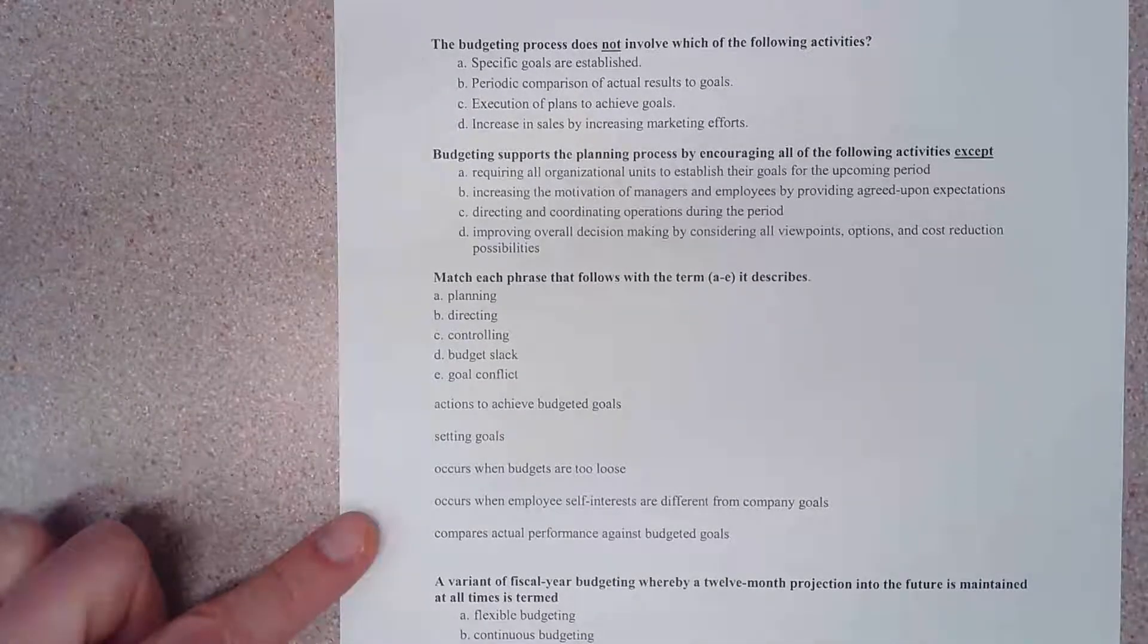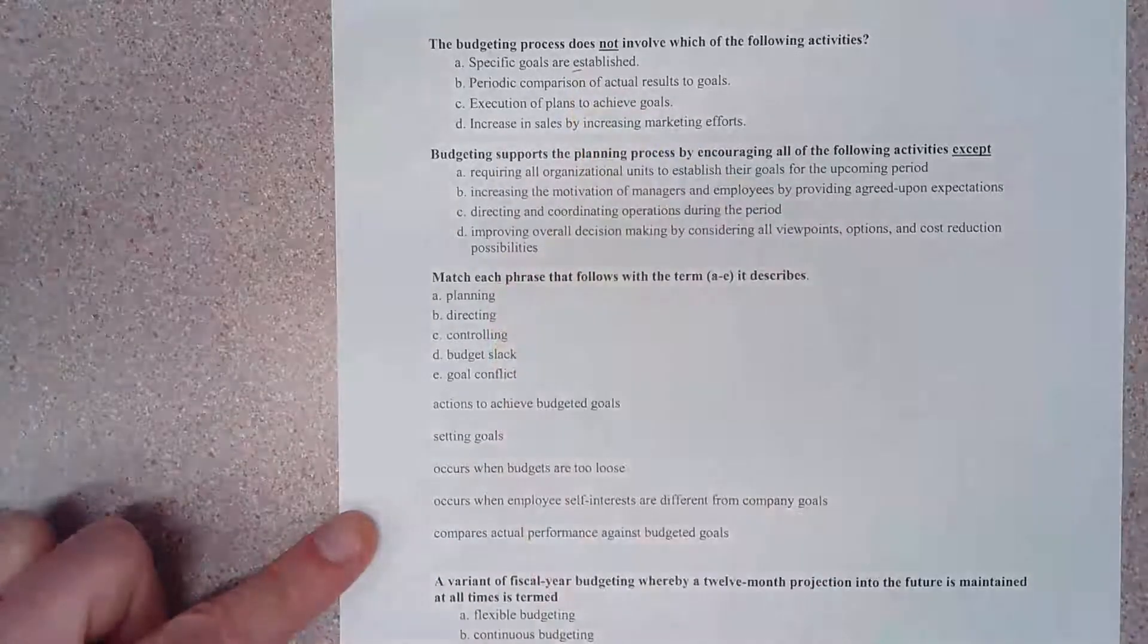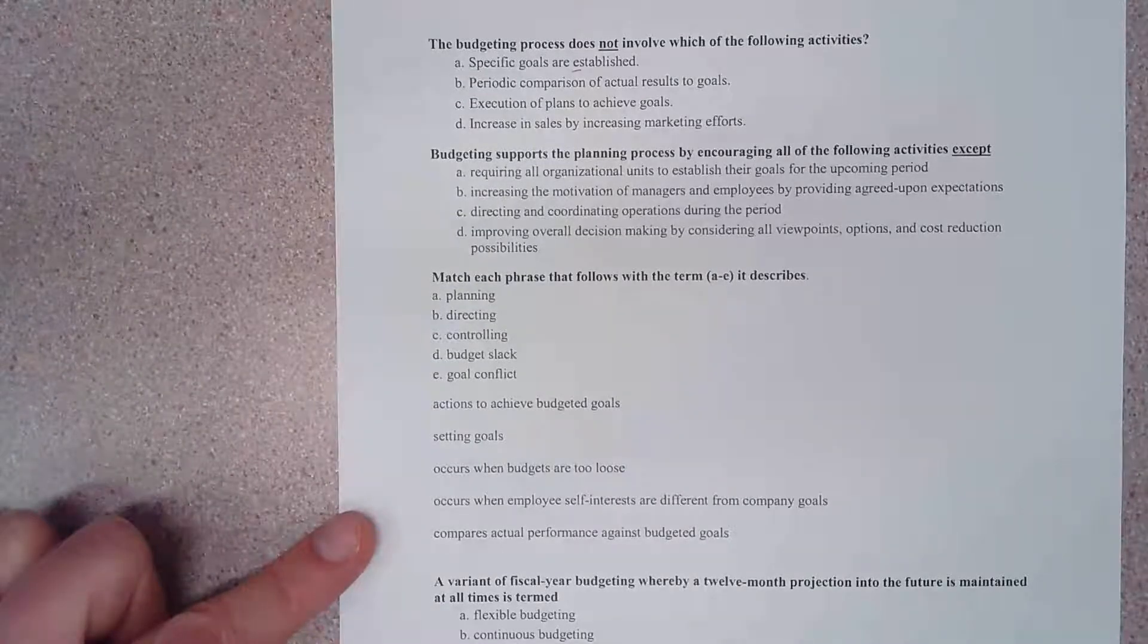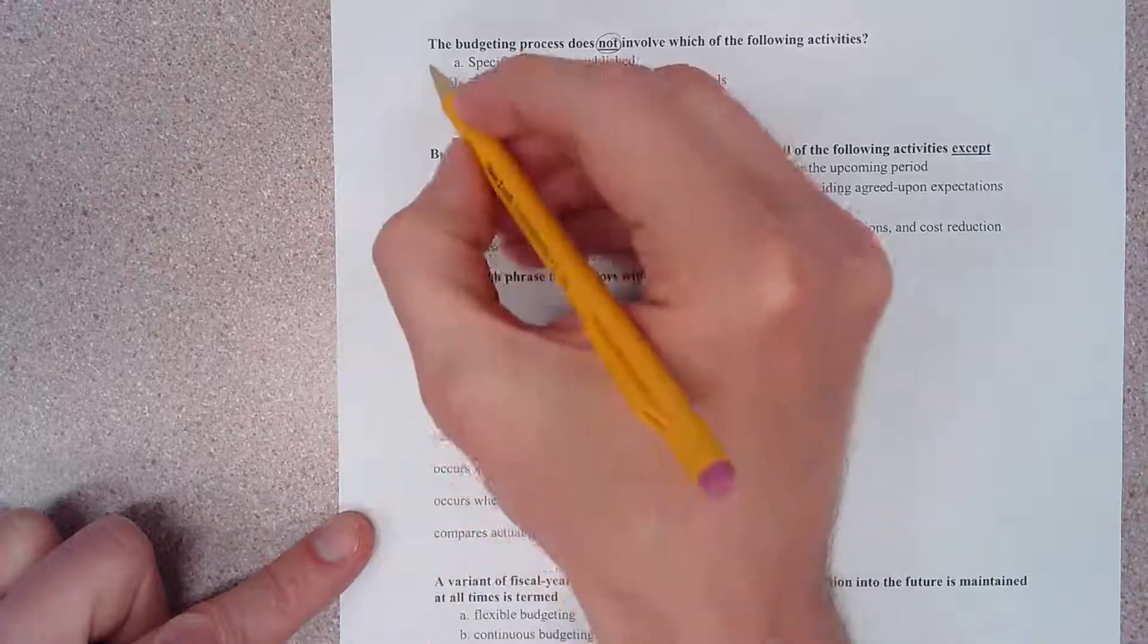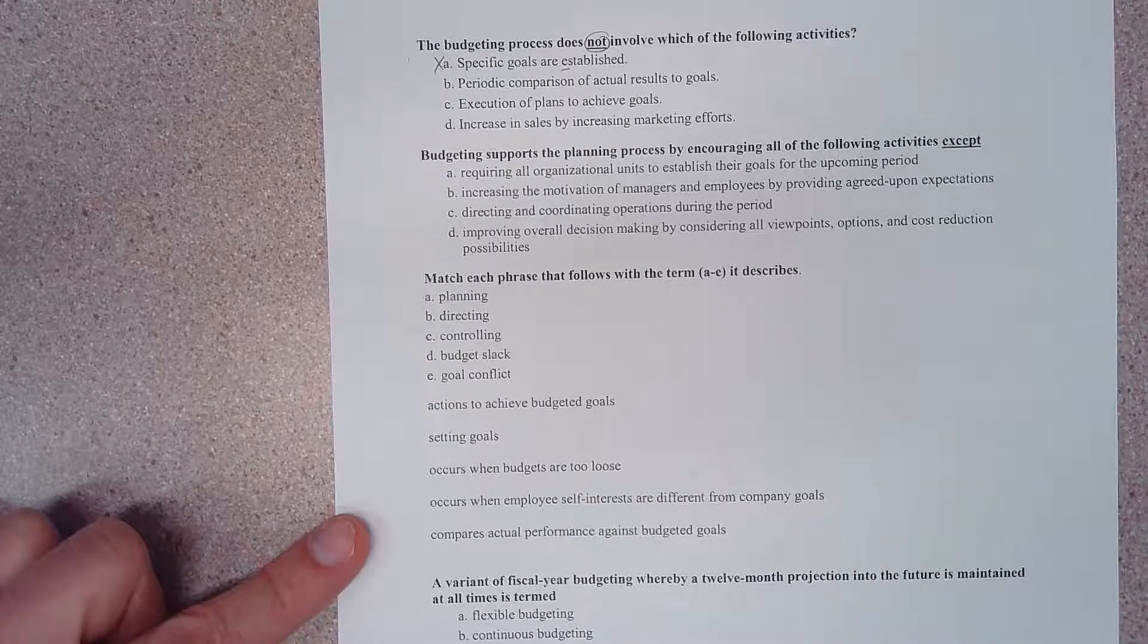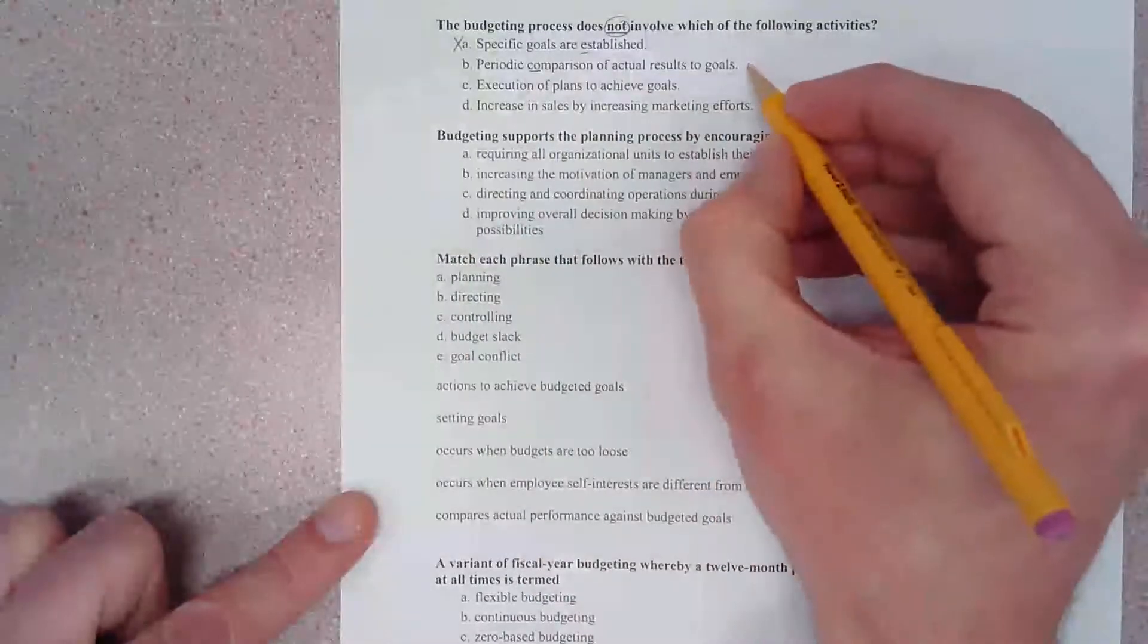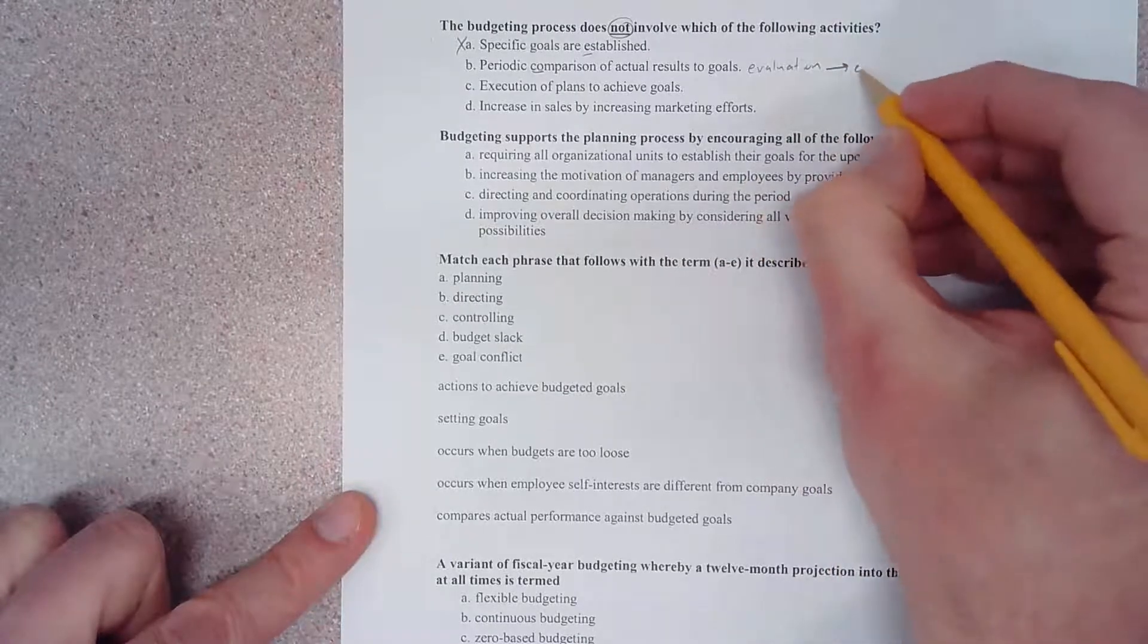Choice A says specific goals are established. Well, that's one of our three E's of the overall budgeting process. This is part of our planning process more specifically, and so because they're asking for NOT a part or not involved in the budgeting process, this would be an incorrect answer.